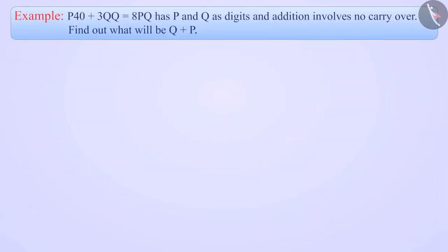Next example. If p40 plus 3qq equals 8pq, in which p and q are digits and no carry-over has been taken in this addition, then find out what will be the value of q plus p. Here, we have to first find the value of p and q.